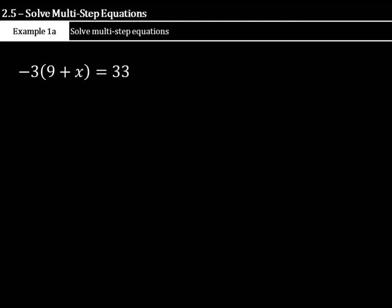Hi, Mr. Richards here. Today we're going to take a look at how to solve multi-step equations. In our first example we have negative 3 times the quantity 9 plus x equals 33. What we're going to need to do is to distribute the negative 3 to the 9 and the x.